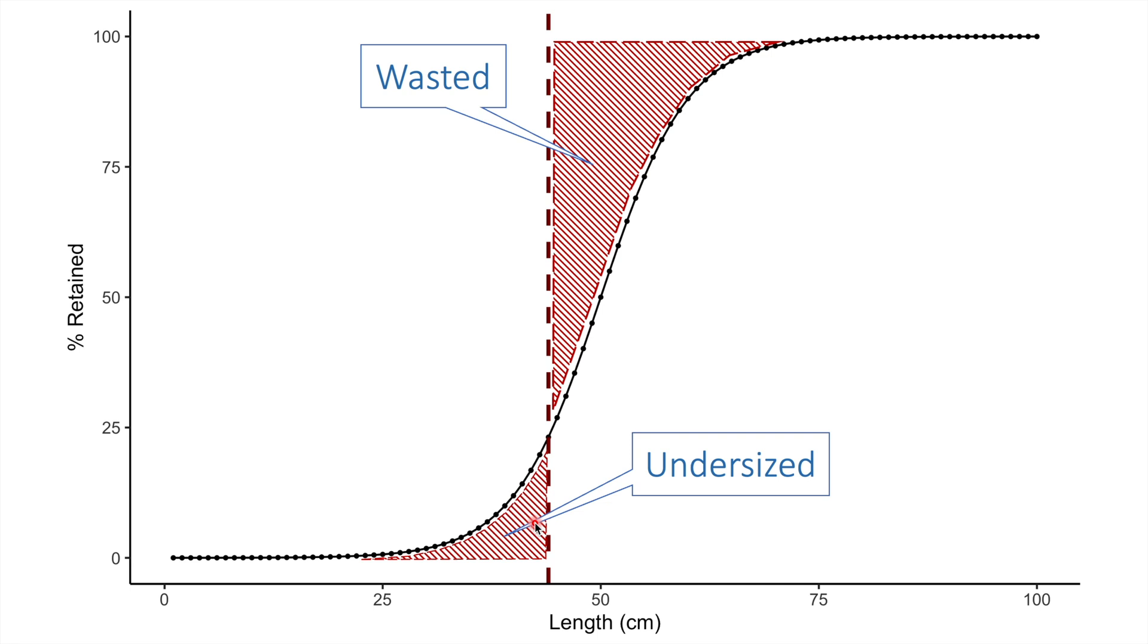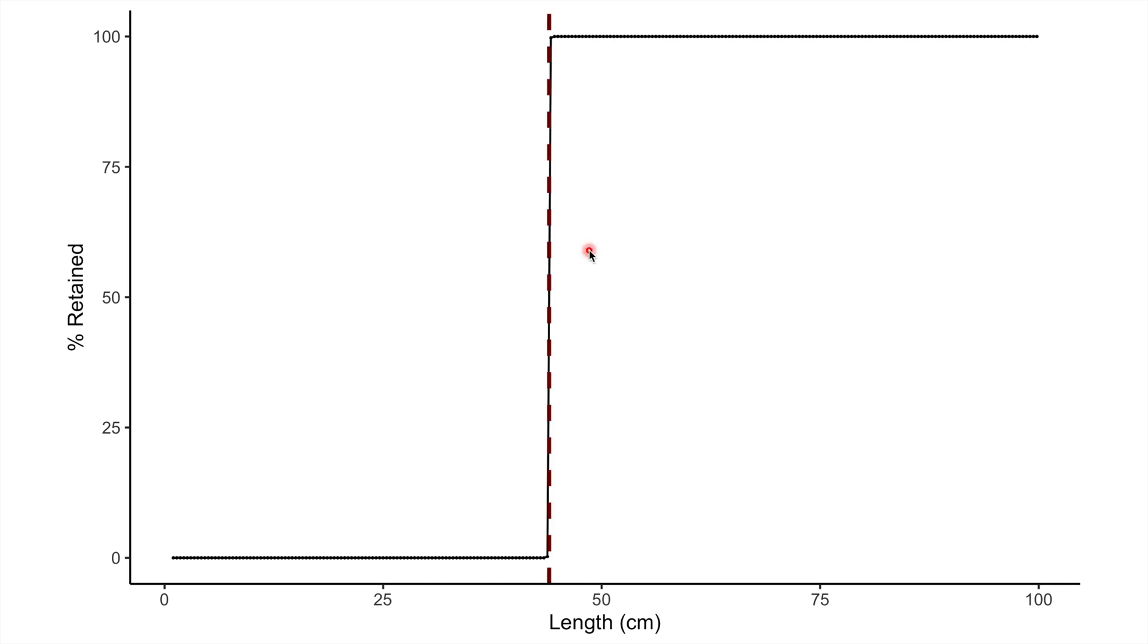Therefore, fisheries management and fishers alike seek to minimize these two areas of the curve shown in red, with the overall intention of achieving a knife edge selection curve, where no undersized fish are caught and all fish that are caught are within size limits.